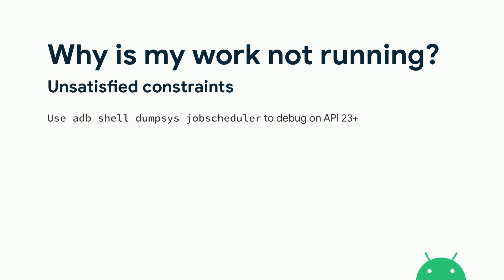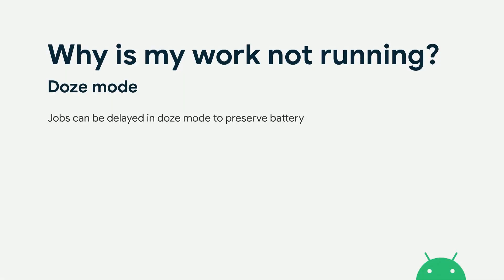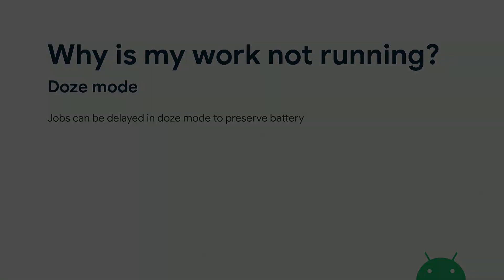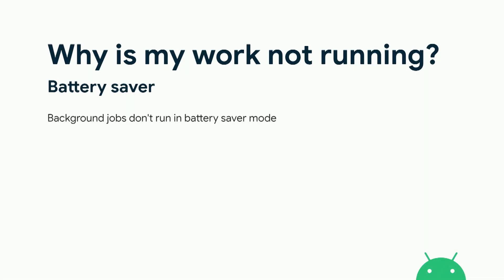Another answer might be you're in Doze mode. Remember that WorkManager is for deferrable processing, so your jobs can be delayed in Doze mode to preserve battery. Similarly, BatterySaver mode — which is on by default on Pixel devices when your battery gets below 15% — background jobs don't run in that case either.